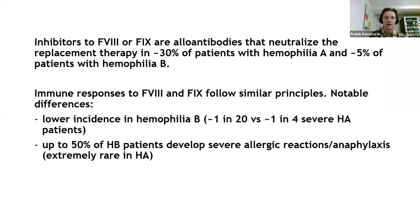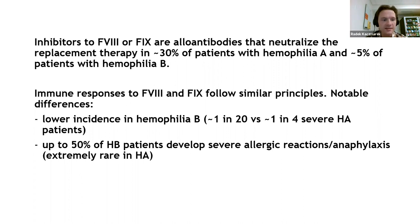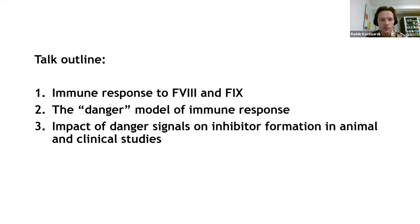Inhibitors to coagulation factor VIII or IX are antibodies that neutralize the replacement therapy in about 30% of patients with hemophilia A and about 5% of patients with hemophilia B. Most of what we know about inhibitor formation comes from studies on factor VIII inhibitors. Two notable differences exist between A and B: incidence, since inhibitors occur rarely in hemophilia B, and the fact that up to 50% of patients with severe hemophilia B develop severe allergic reactions to factor IX, which are extremely rare in hemophilia A.